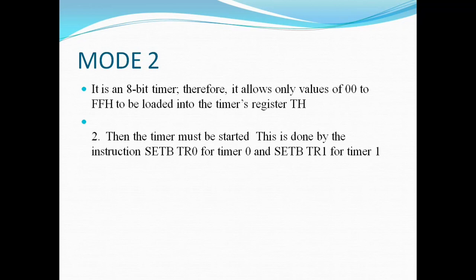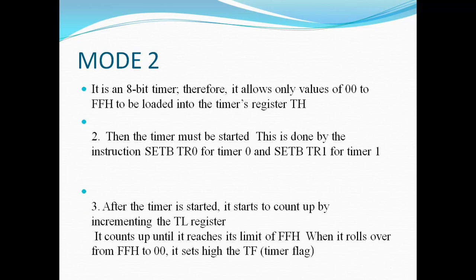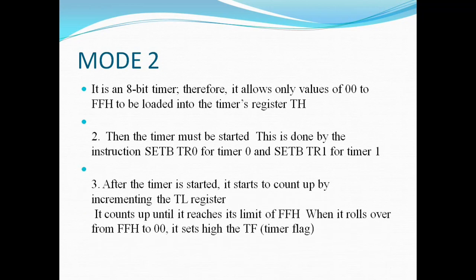This is done by the instruction SET B TR0 for timer 0 and SET B TR1 for timer 1. In the next step, once you start the timer, the timer starts to count up by incrementing the TL register.